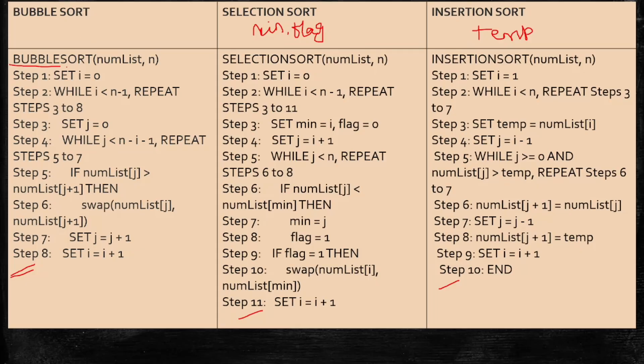Bubble sort, you can see here the first step. Bubble sort numList n, selection sort also selection sort numList n, insertion sort also the same. Step 1, set i equal to 0. Here also set i equal to 0, i equal to 1 here, it is changing. Step 2, while i is less than n minus 1, repeat step 3 to 8. Here i is less than n minus 1, the same only. Here also i is less than n minus 1. This is one pattern you have to remember.